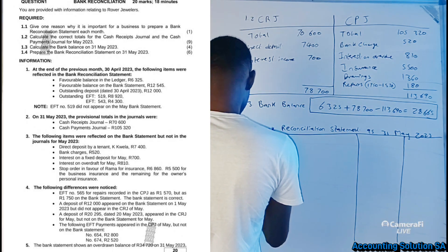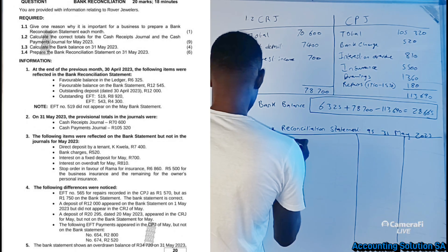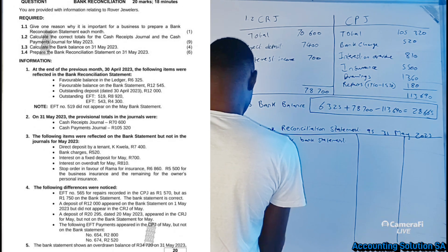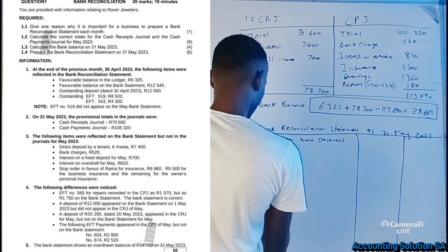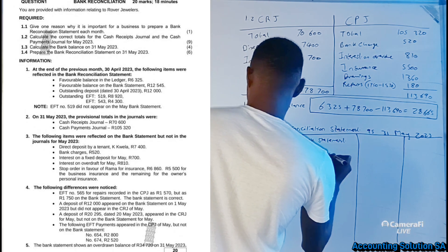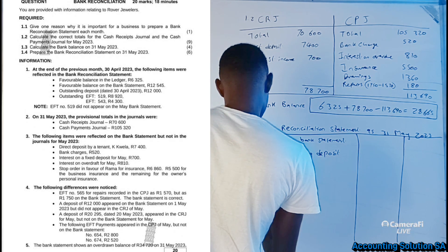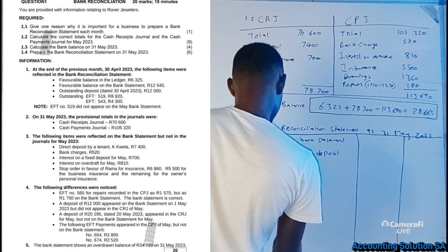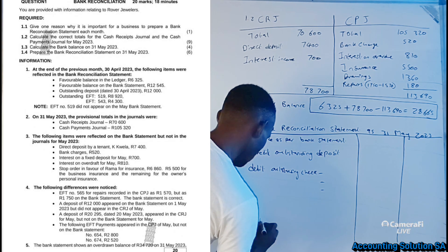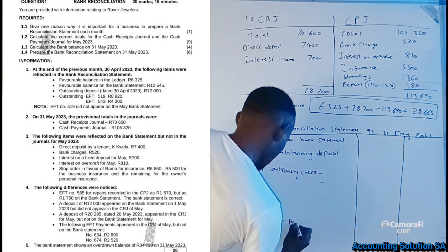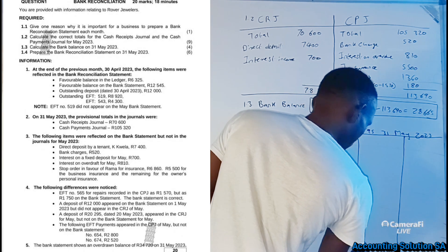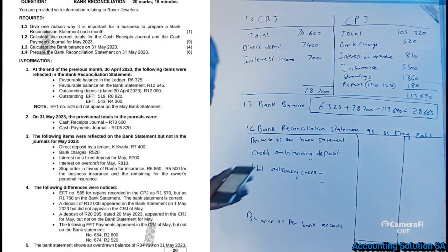Now let's proceed to the bank reconciliation statement. We start with the balance as per the bank statement. Then we add outstanding deposits on the credit side and list outstanding checks on the debit side. After that we have the balance as per the bank account, and we check whether everything balances.